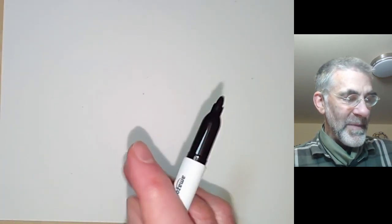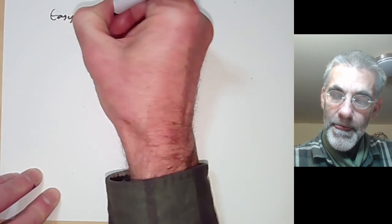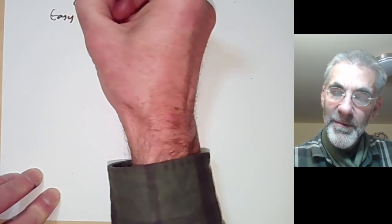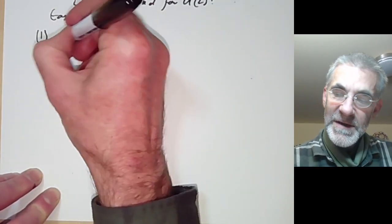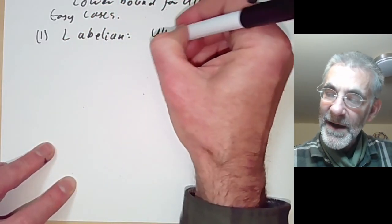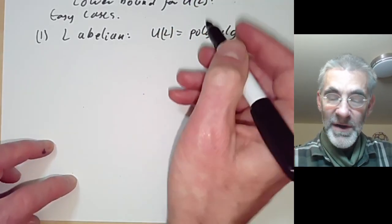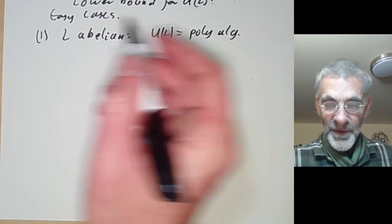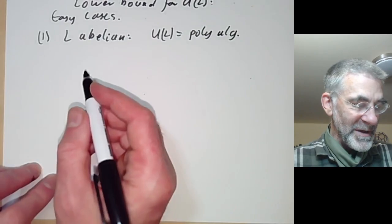Let's look at some easy cases for finding a lower bound for U(L). First, if L is abelian, then U(L) is just a polynomial algebra, as we saw earlier, so it's obvious that the previous map was an isomorphism.